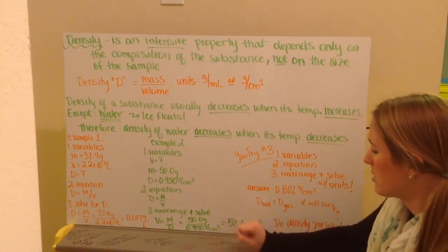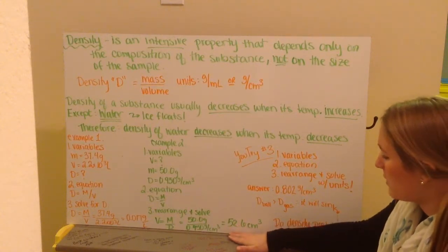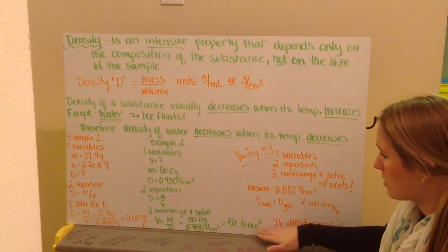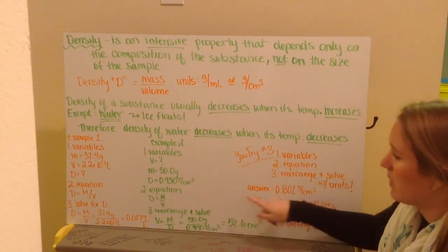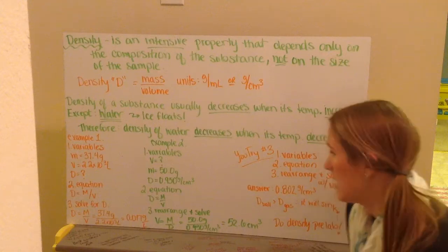I have 1 over 1 over centimeters cubed. That brings my centimeters cubed to the top. And I give a final answer of 52.6 centimeters cubed. This is the volume of cough syrup that I would have to have 50.0 grams of it.